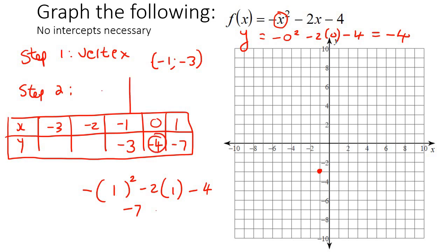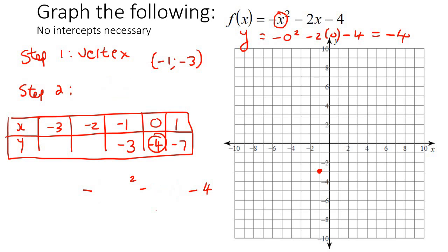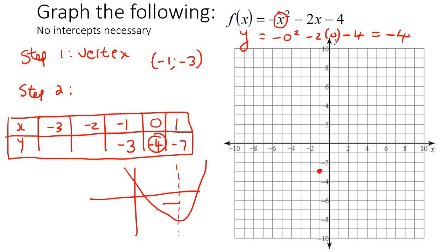Now just use symmetry. We said these equations are symmetric, so the y values are the same on either side as long as you go the same distance from the vertex. So if x=0 gives negative 4, then x = negative 2 also gives negative 4. And if x=1 gives negative 7, then x = negative 3 also gives negative 7. Now plot all those points: negative 3 and negative 7, negative 2 and negative 4, 0 and negative 4, and 1 and negative 7. And if we draw a curve through those points, that's what the graph looks like.